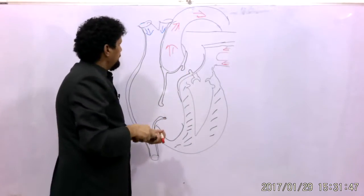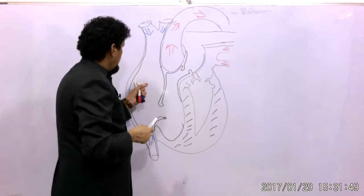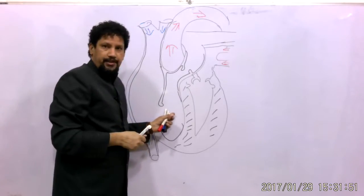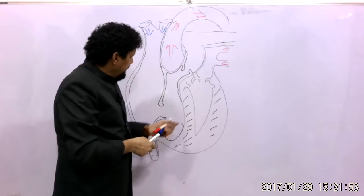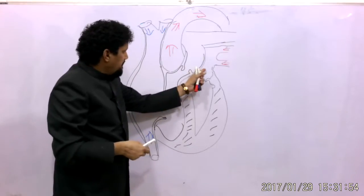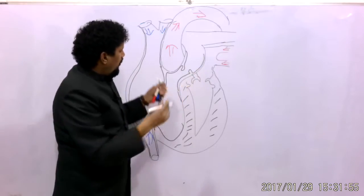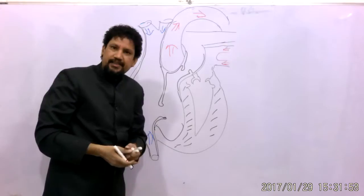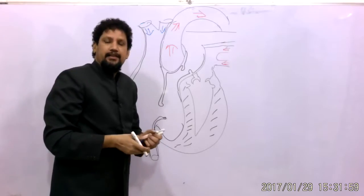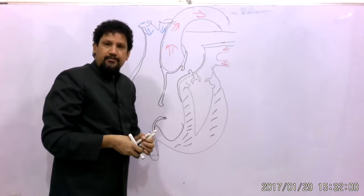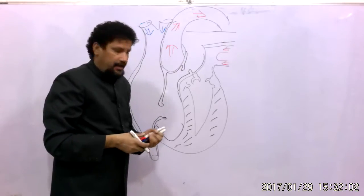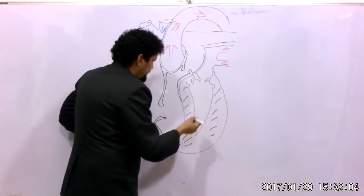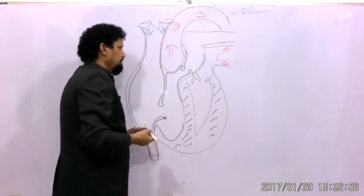We can see here the right atrium, the right ventricle, and the left atrium — which is on the backside of the heart. We can't see the left atrium from the front of the heart. And here is the thick-walled left ventricle.